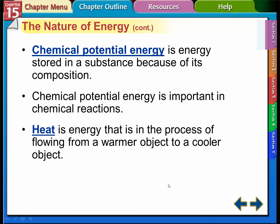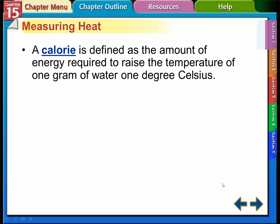Heat energy is the process of flowing from a warmer object to a cooler object — heat always goes from warm to cold. When you put an object in your refrigerator, the heat from that object, like a hot bottle of water, flows out into the coolness of the refrigerator. The symbol we use for heat is the small letter Q.